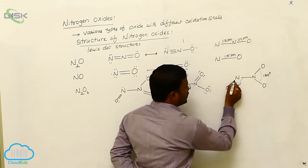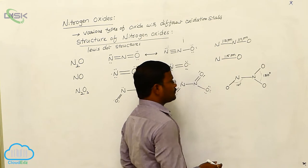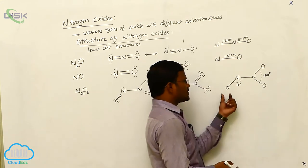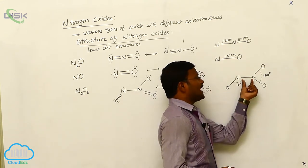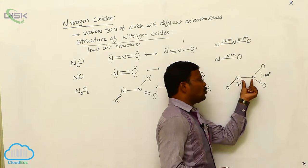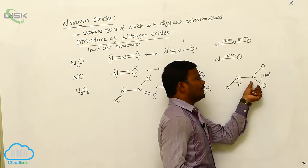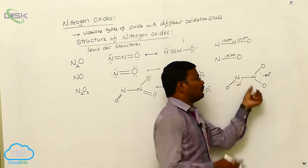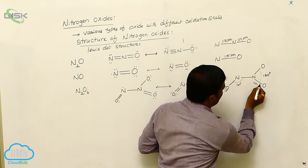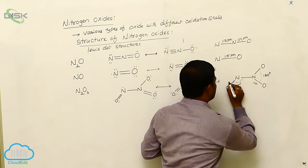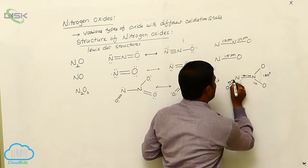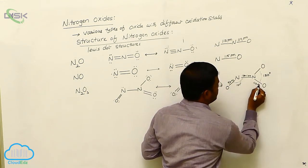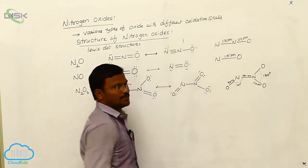The bond lengths in N₂O₃ are: 98 picometers, 180.1 picometers, and 112 picometers for the respective N–N and N–O bonds.